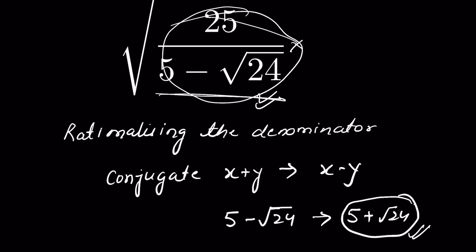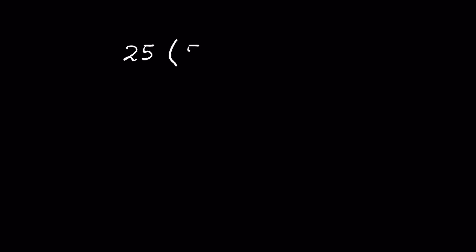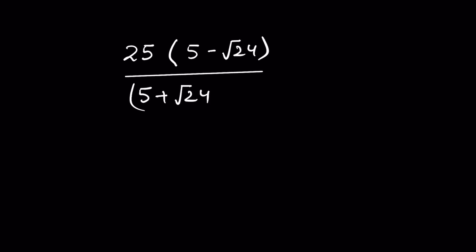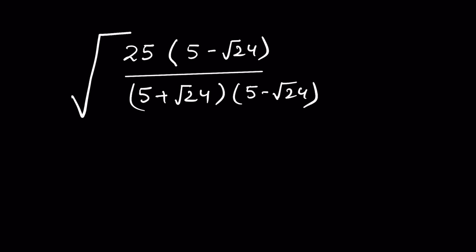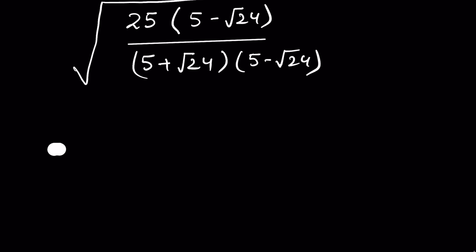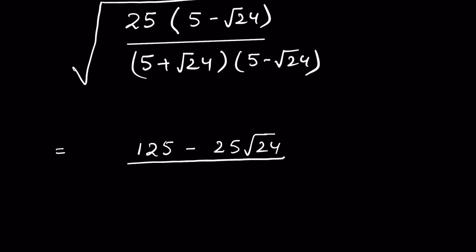So let's rationalize it using this conjugate. We get 25 times (5 plus square root of 24) over (5 minus square root of 24) times (5 plus square root of 24), all under square root. Expanding the numerator: 25 times 5 is 125, minus 25 times square root of 24. Now in the denominator, if we consider 5 as a and square root of 24 as b, then it is in the form of (a plus b)(a minus b).